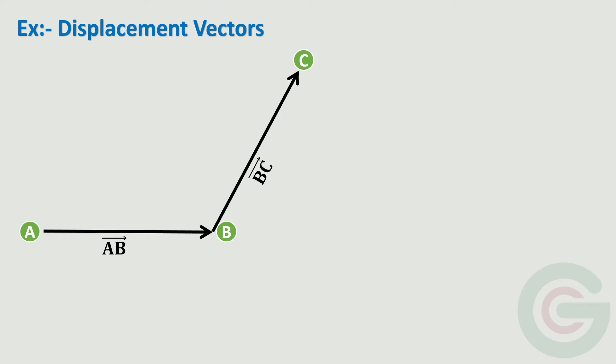Now to understand the triangle law, let's take an example of displacement vectors. Let's say that I need to travel from point A to point B. The displacement vector from A to B is represented by the vector AB. Again, let's say I want to move further from point B to point C. The displacement vector from B to C is represented by the vector BC.